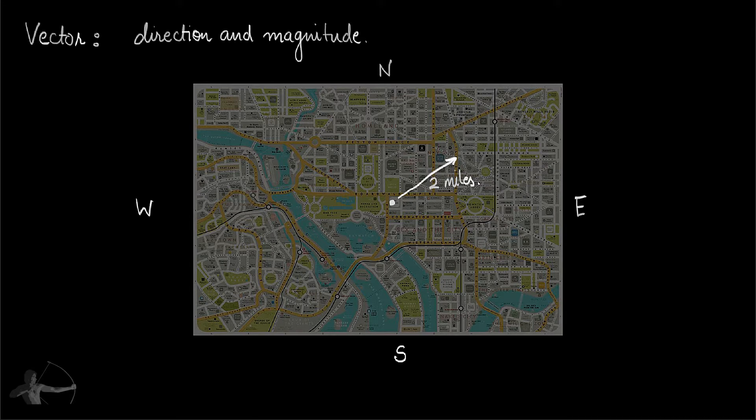What you have gotten in this information is a direction. Your direction is northeast and your magnitude, which means the distance that you covered, is two miles. This is what a vector is.